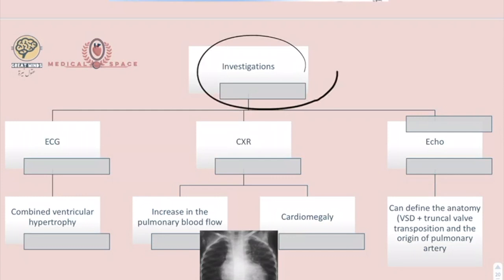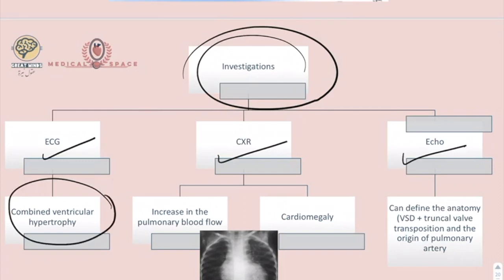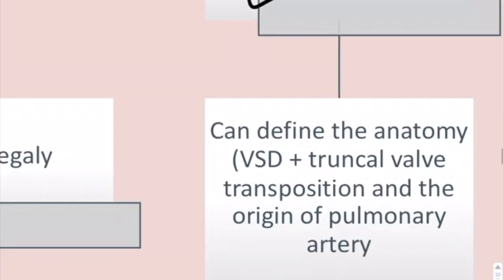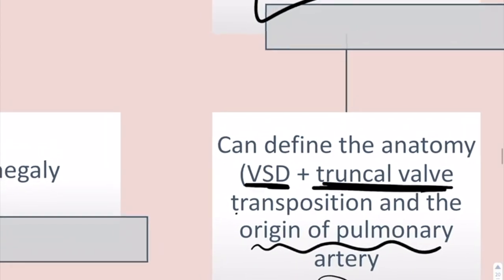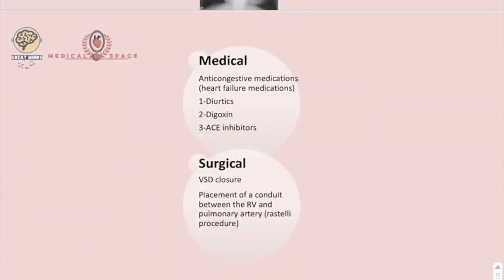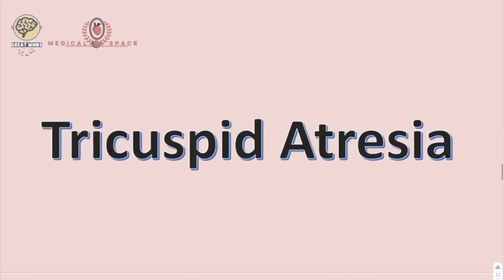Investigations for Truncus Arteriosus include ECG, chest X-ray, and echo. On ECG, you will see combined ventricular hypertrophy. On chest X-ray, you will see cardiomegaly and increased pulmonary blood flow. On echo, you can define the anatomy of the VSD, the truncal valve, and the origin of the pulmonary arteries. Medical treatment involves anti-congestive heart failure medications such as diuretics, digoxin, and ACE inhibitors. Surgical treatment is VSD closure and the Rastelli procedure, connecting the right ventricle to the pulmonary arch.